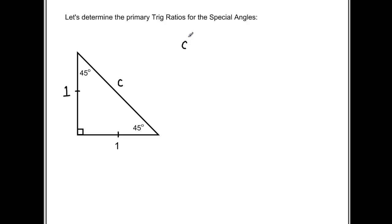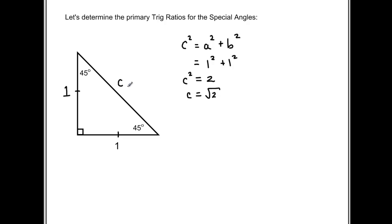Using Pythagorean theorem: C squared equals A squared plus B squared. Both sides are equal to one, so we get one squared plus one squared, which gives C squared equals two. Therefore C equals the square root of two. That makes sense because the hypotenuse must be the longest side. Since the square root of four equals two, the square root of two is somewhere between one and two. So this side is root two.